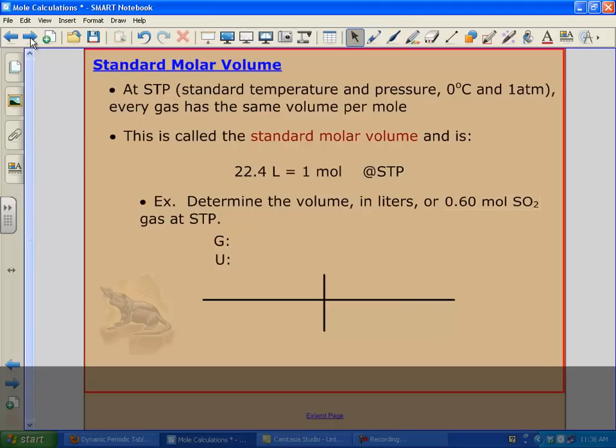One thing that sometimes we leave out: standard molar volume. It all boils down to this. If we're talking about a gas at standard temperature and pressure, which is freezing, zero degrees Celsius and one atmosphere, it is always this: 22.4 liters equals one mole. It doesn't matter what gas it is. As long as it's a gas and it's at STP, then this is always true. We look at our example: determine the volume in liters of 0.60 moles of sulfur dioxide gas at STP. So we're at STP, so this applies.